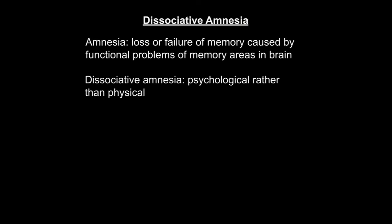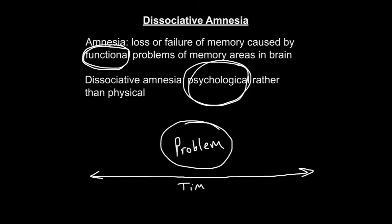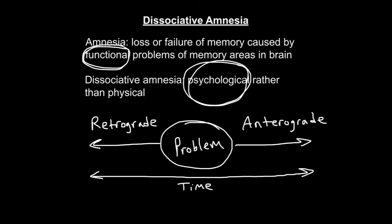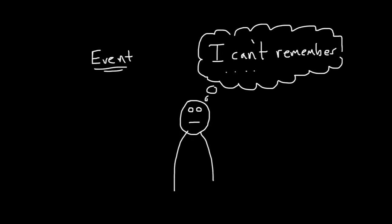Amnesia is a loss or failure of memory caused by functional problems of memory areas in the brain. Dissociative amnesia can be differentiated from organic amnesia in that it differs in cause. Dissociative amnesia is caused by psychological factors rather than physical. There are two main categories of amnesia. In retrograde amnesia, there's a loss of memory for events that occurred prior to the onset of the problem. In anterograde amnesia, there's a loss of memory for events that occurred after the onset of the problem. There are a variety of ways that amnesia can manifest. Localized amnesia is the most common form, in which the individual forgets only specific and related past events, usually surrounding a disturbing event.